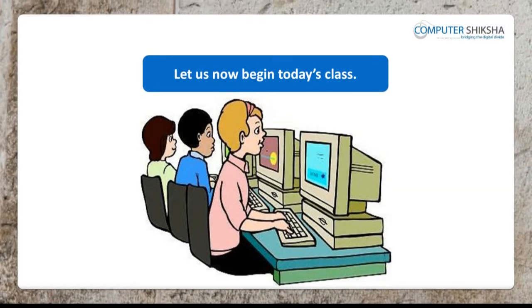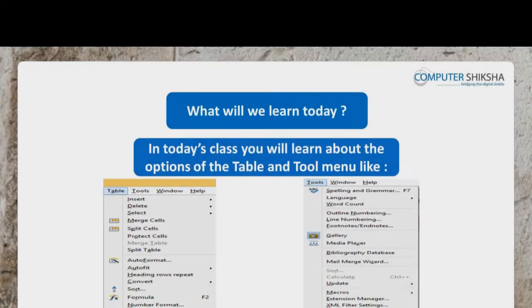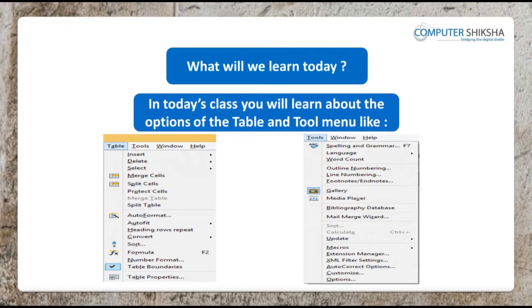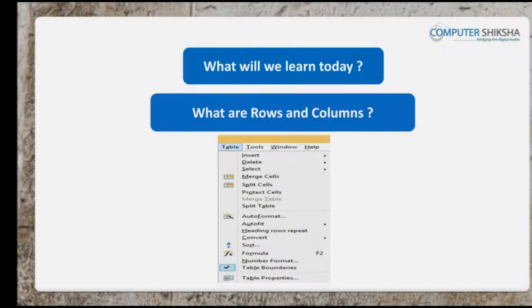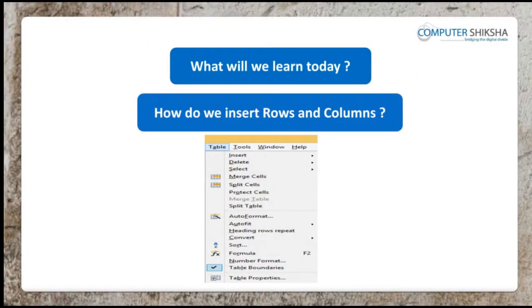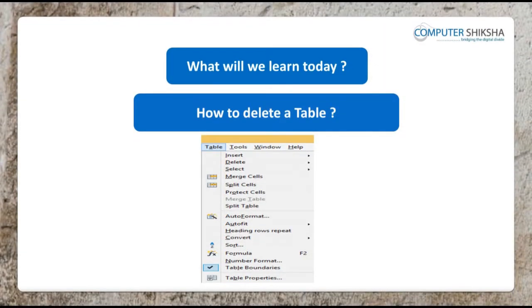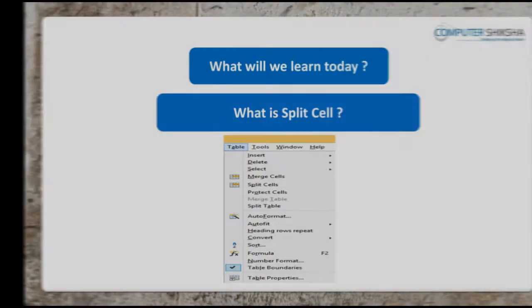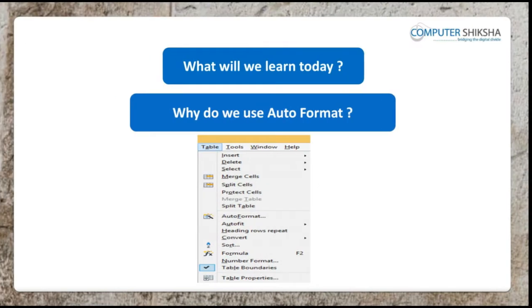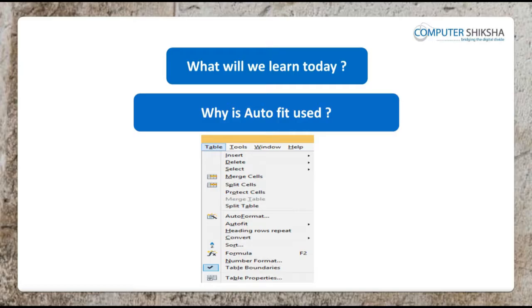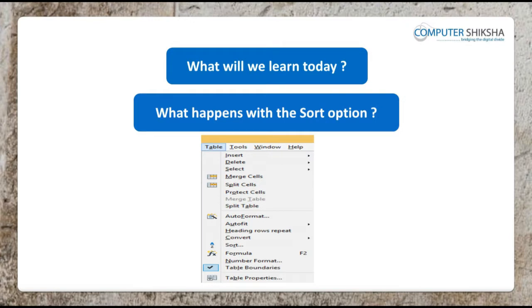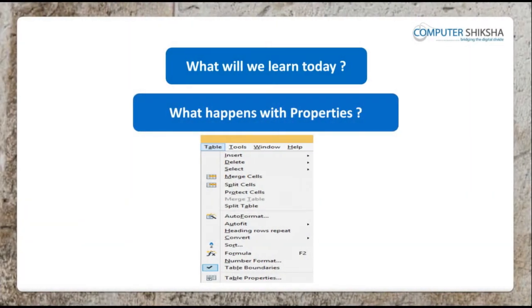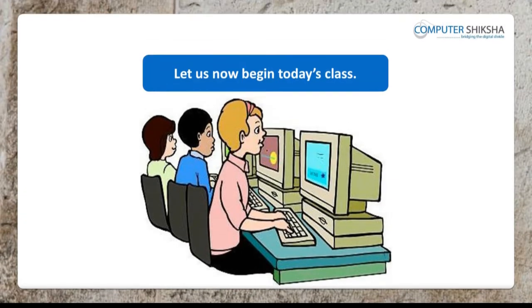Let us take a look at what you will learn today. In today's class, you will learn about the options of the Table and Tools menu. Like, what is a table? How to insert a table? What are rows and columns? How do we insert rows and columns? How to delete a table? What is merge cell? What is split cell? Why do we use auto-format? Why is auto-fit used? Why do we use convert? What happens with the sort option? Why do we use formula? What happens with the number format? What happens with properties? So, let us now begin today's class.